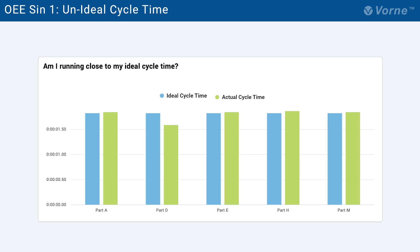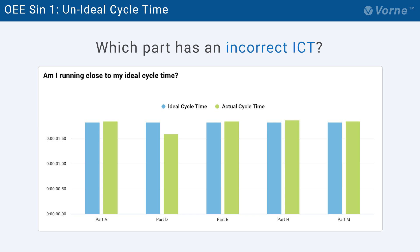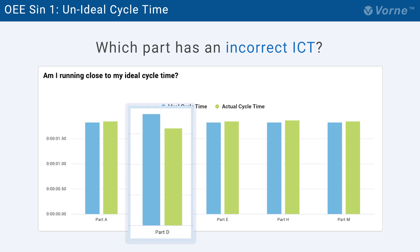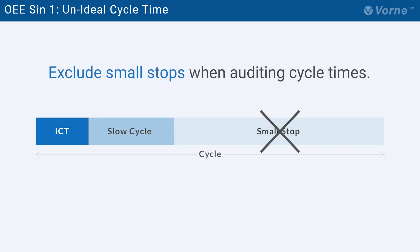In the chart here, the blue column represents the ideal cycle time and the green column represents the actual cycle time. Can you spot the part that definitely has an incorrect ICT? It's Part D. Any time ICT is longer than actual cycle times, the ICT is set too high. Make sure to exclude small stops when auditing cycle times, even though they are considered a cycle loss and therefore are a part of OEE performance. Including small stops in your cycle time analysis will increase the average cycle time and make it more difficult to detect when the ICT is set incorrectly.